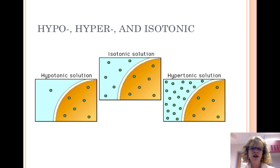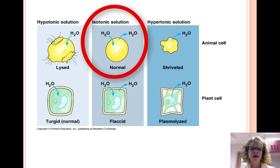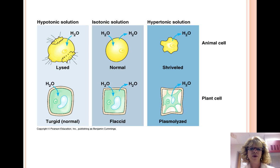Isotonic is when a solution has the same solute concentration as another solution — in other words, when the concentrations on either side of a membrane become equal. If a red blood cell is put into an isotonic solution, the cell's volume remains the same. The cell gains water at the same rate as it loses water. For example, starfish and crabs are isotonic to seawater.